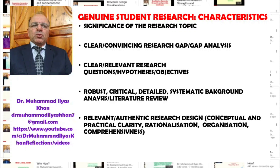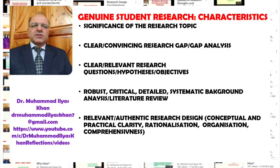Thirdly, there should be a robust, critical, detailed, and systematic background analysis — in other words, a critical literature review that explores and analyzes the background of the topic in detail, with authentic referencing and adequate evidence for sources relevant to the topic. A critical and detailed analysis and presentation of the background and literature review is generally a part of genuine student research.